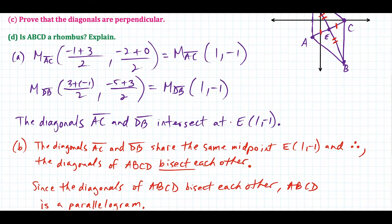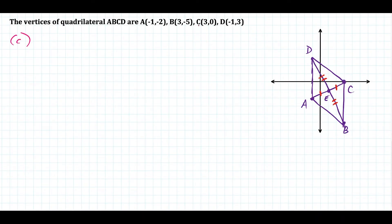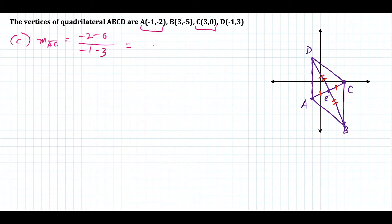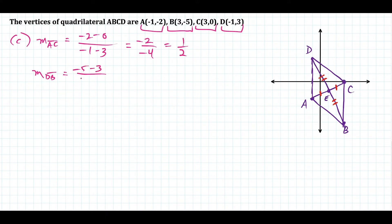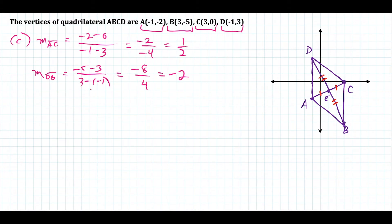For part C, we want to prove that the diagonals are perpendicular by analyzing the slope of AC and DB. The slope of segment AC is: negative two minus zero divided by negative one minus three, which gives negative two over negative four, which is positive one half. The slope of DB is: negative five minus three in the numerator, divided by three minus negative one in the denominator, giving negative eight over positive four, which simplifies to negative two. One half and negative two are opposite reciprocals — you flip the fraction and change the sign — so this shows the lines are perpendicular.